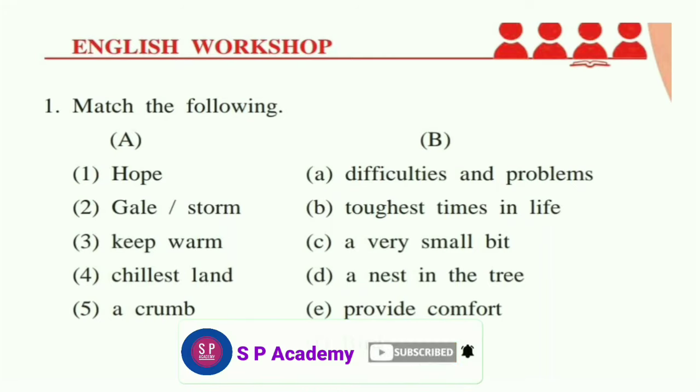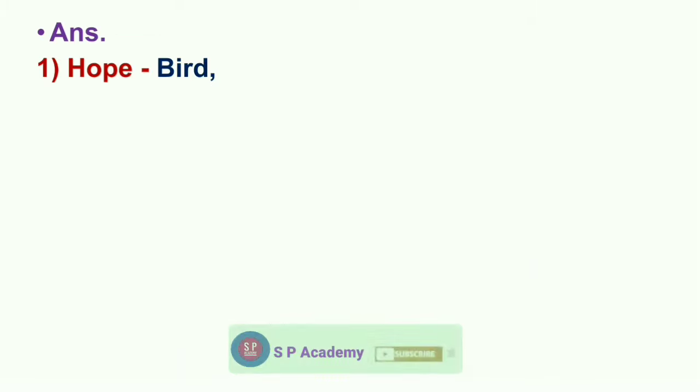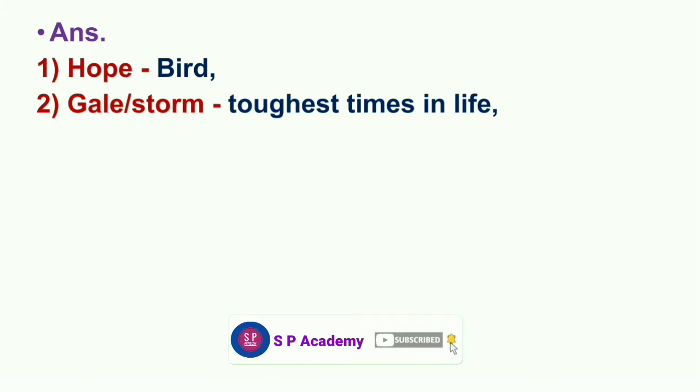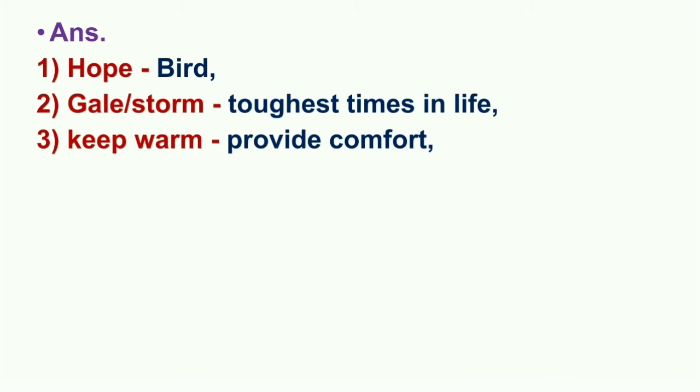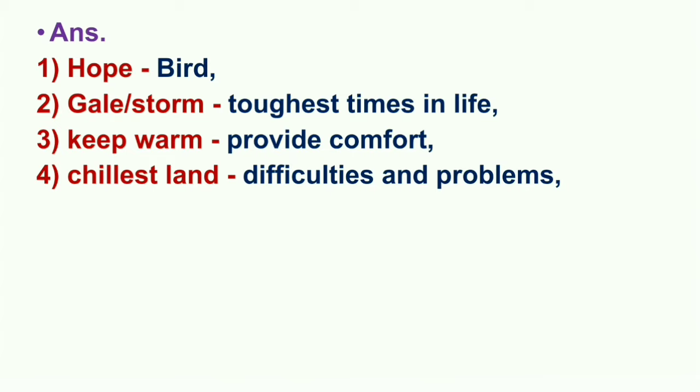Question number one: Match the following. Match column A and B correctly. One: hope means expectation. Two: gale or storm means toughest time in life. Three: keep warm means provide comfort. Four: chillest land means difficulties and problems. Five: crumb means a very small bit.